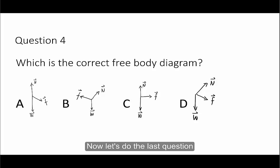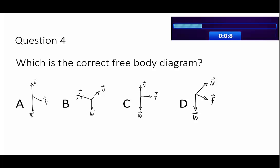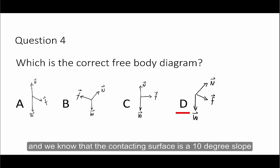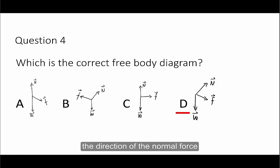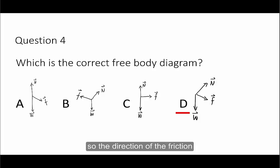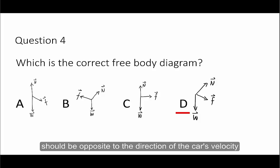Now let's do the last question. This is the correct answer. The gravitational force is vertical pointing downward, and the normal force is perpendicular to the contacting surface — a 10-degree slope — so you should be able to figure out the direction of the normal force. The car's velocity is pointing up the slope, and since the car is decelerating, the direction of friction is opposite to the direction of the car's velocity.